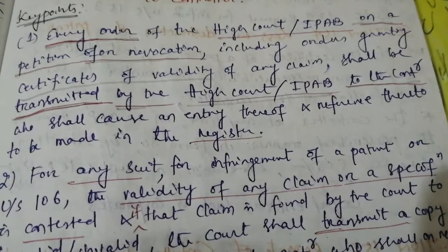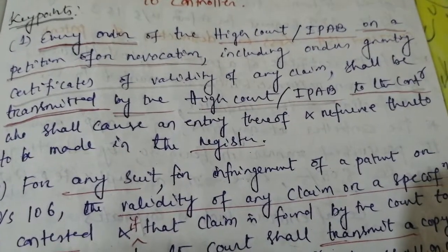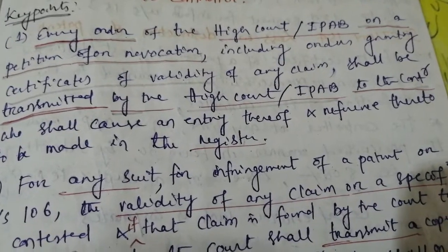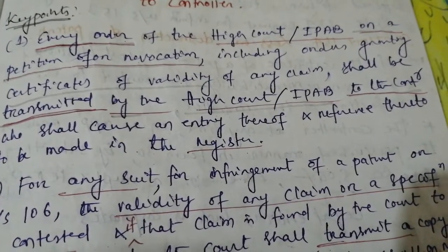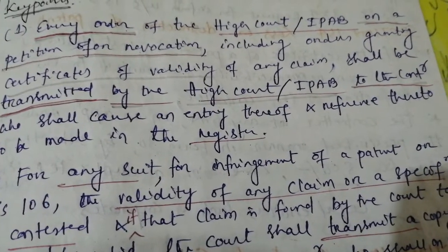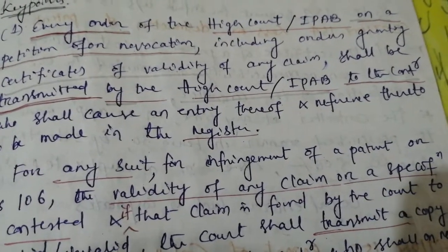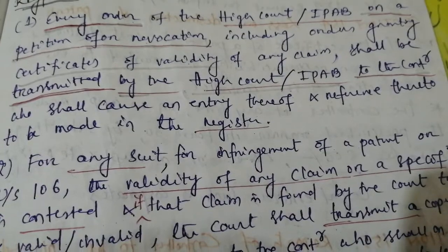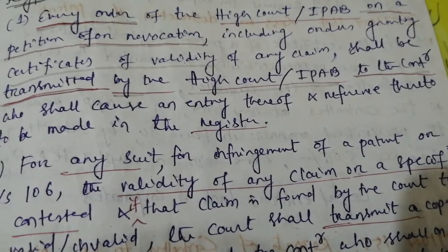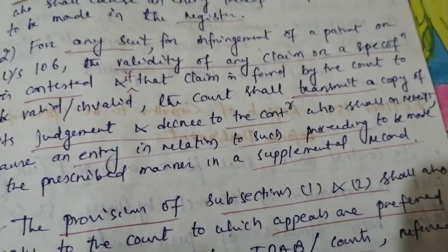In simple words, we can say that the orders of the High Court or IPAB, which are based on the petition for revocation — and it includes the orders granting certificates of validity of any claim — shall be transmitted by the High Court or IPAB to the controller, and the controller shall cause an entry thereof and reference to be made in the register.